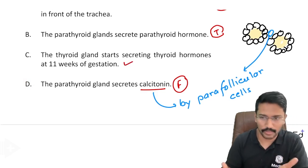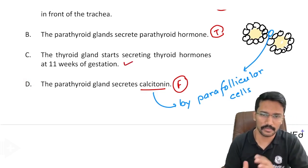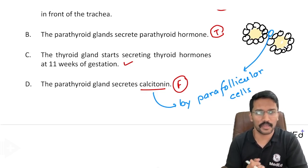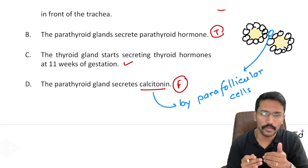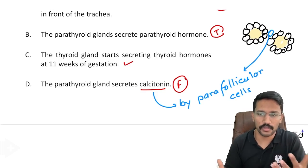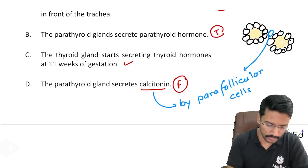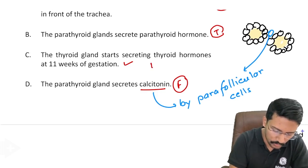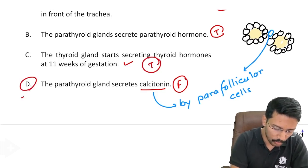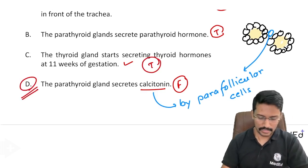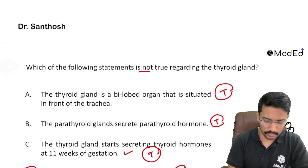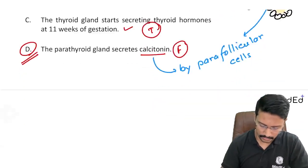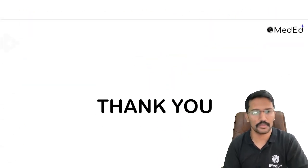For students preparing for super-speciality or endocrinology exams, it's important to know which hormone appears during which week of fetal life. Remember: thyroid hormone appears at the 11th week of gestation — that is a true statement. Since the question asks which option is NOT true, option D — that the parathyroid gland secretes calcitonin — is the correct answer.